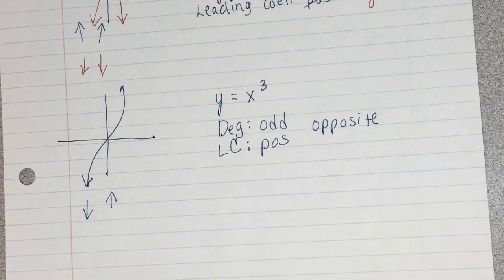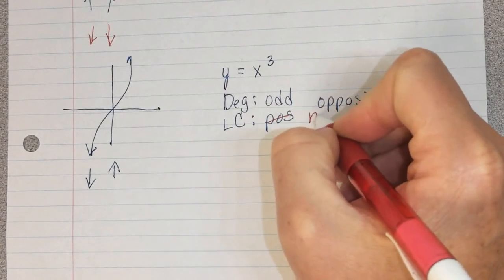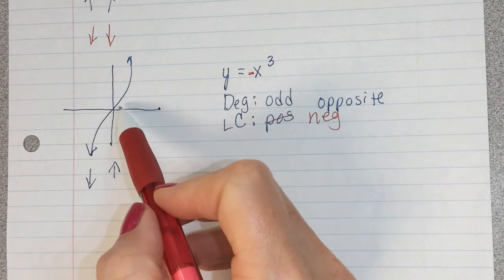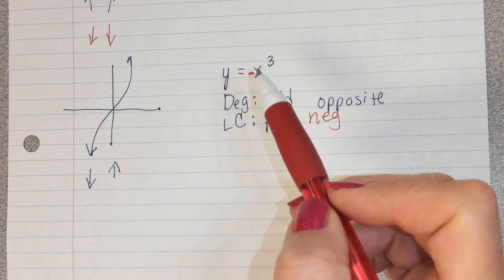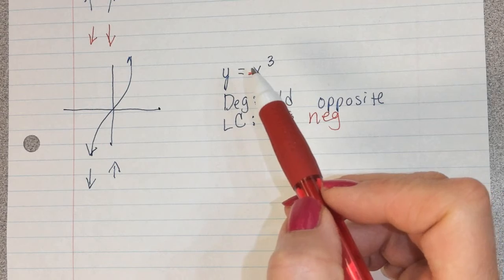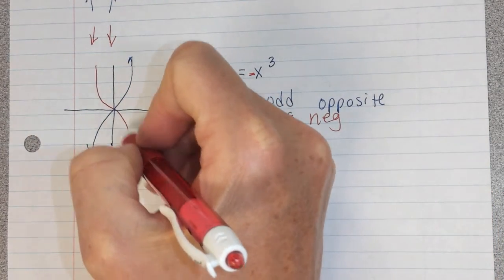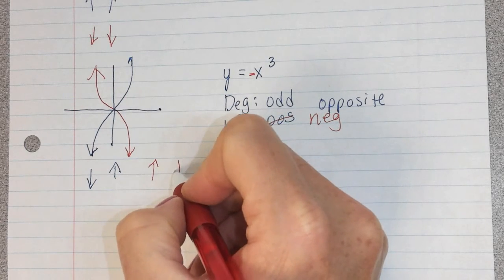So what's going to happen then if instead of having a positive leading coefficient, we change it to a negative? What does that do to our graph? What does it do to our graph if we put a negative in front of any function? It flips it, doesn't it? So now it's going to look like that. And so now it's going to be going up and then down.